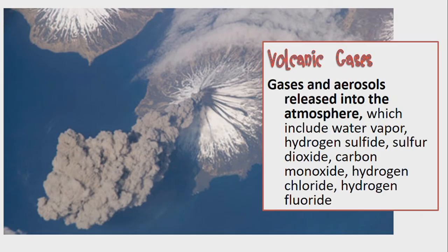Next are volcanic gases — gases and aerosols released into the atmosphere, which include water vapor, hydrogen sulfide, sulfur dioxide, carbon monoxide, hydrogen chloride, and hydrogen fluoride. Those are the different volcanic gases.